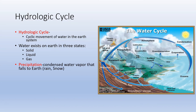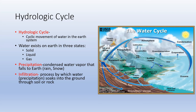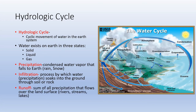Precipitation is condensed water vapor that falls to Earth in any form — rain, snow, sleet, whatever. Infiltration is the process by which water soaks into the ground through soil or rock, or doesn't soak in due to urbanization. Runoff is the sum of all precipitation that flows over the land surface via overland flow, rivers, streams, and lakes.